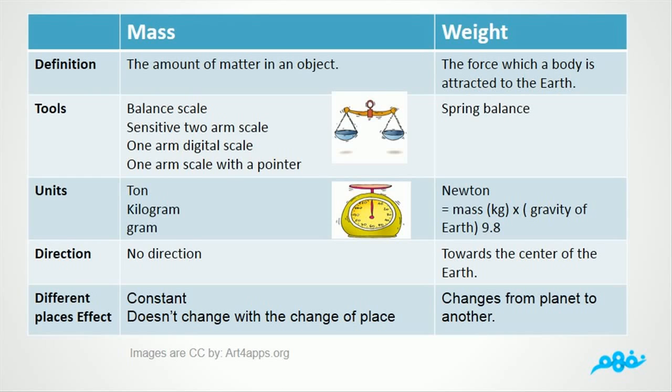Number 4: Direction. Mass has no direction. The weight is towards the center of the earth. Number 5: Different places effect. Mass of objects is stable and does not change from a place to another. Weight changes from planet to another.